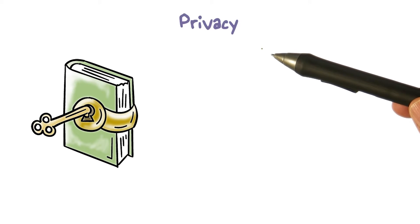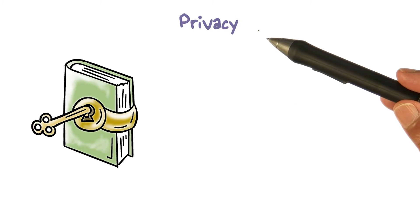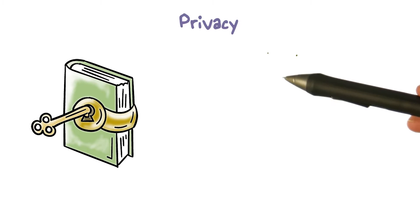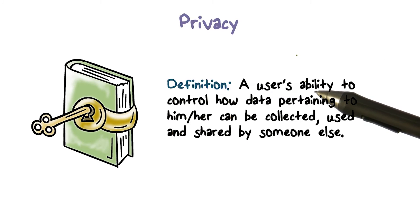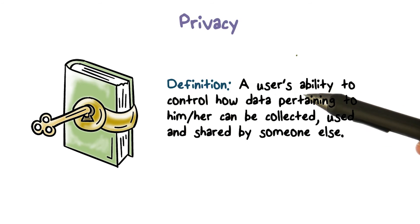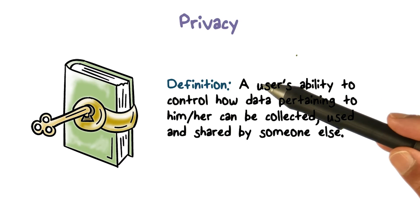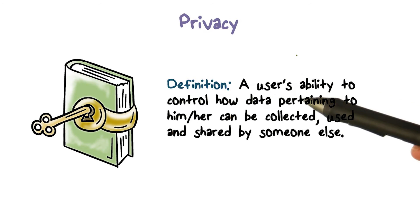But we want to examine it in the context of the online world. So how do we define privacy in this context? Privacy is obviously related to information about us. In this context, it'll be information related to what we do online and data that we have in digital form.